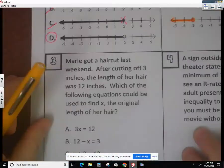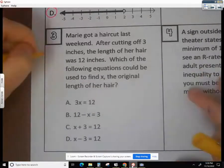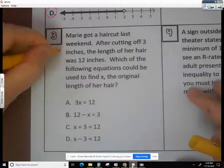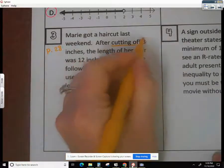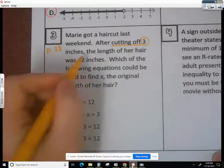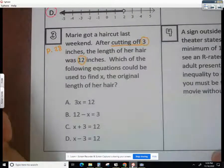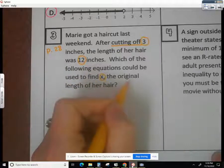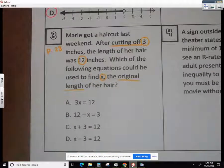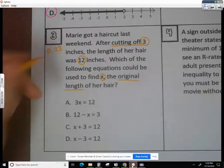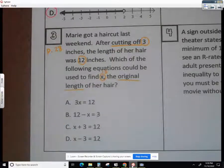Question number three is a real-world equation problem. You can find these on page 28. So Marie got a haircut last weekend. After cutting off 3 inches, the length of her hair was 12 inches. Which of the following equations could be used to find x? And that is the original length of her hair. So I like to figure out what x would actually be, and that kind of helps me. So if I know she got 3 inches cut off, and now she's got 12 inches of hair, that means she must have started with 15 inches. Because if I had 15 and I cut off 3, now I would have 12.